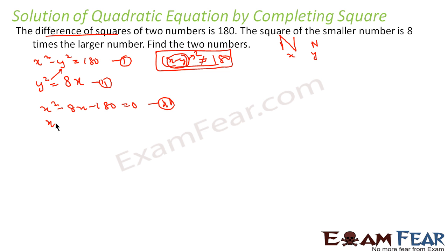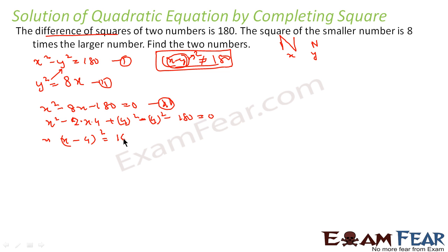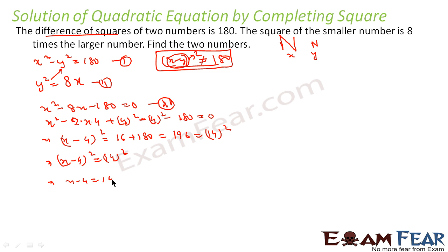This becomes (x − 4)² = 16 + 180 = 196 = 14². So x − 4 = 14 or x − 4 = −14. Two conditions: solving the first gives x = 18, and solving the second gives x = −10. We will check whether both are valid.